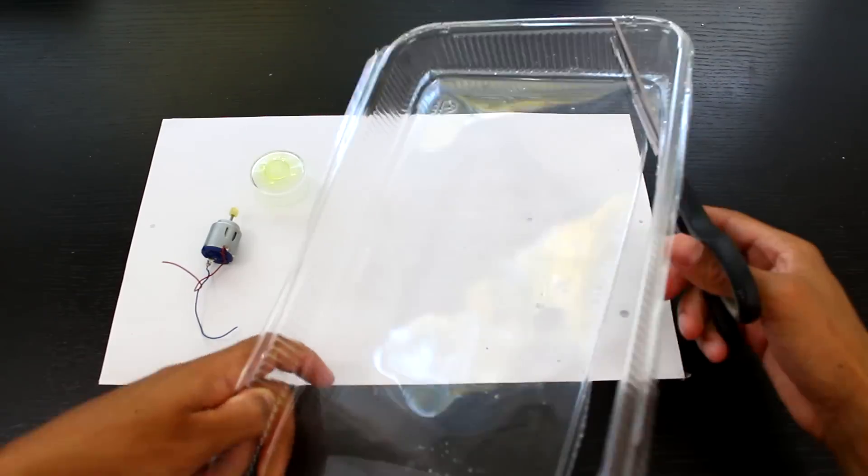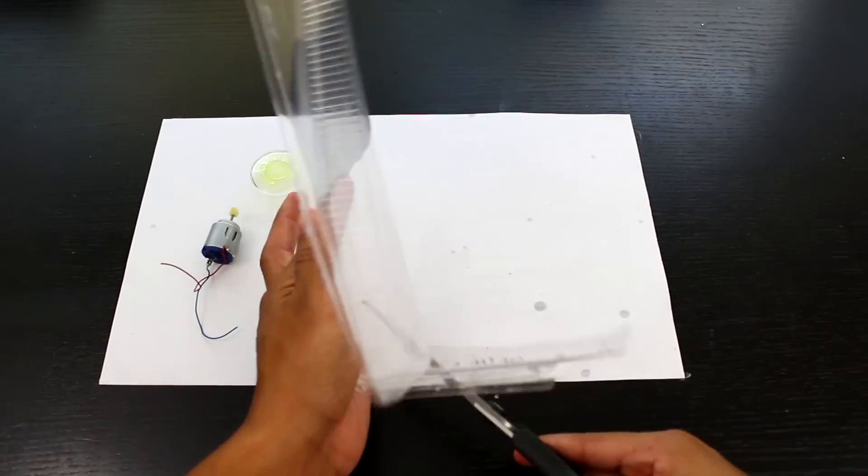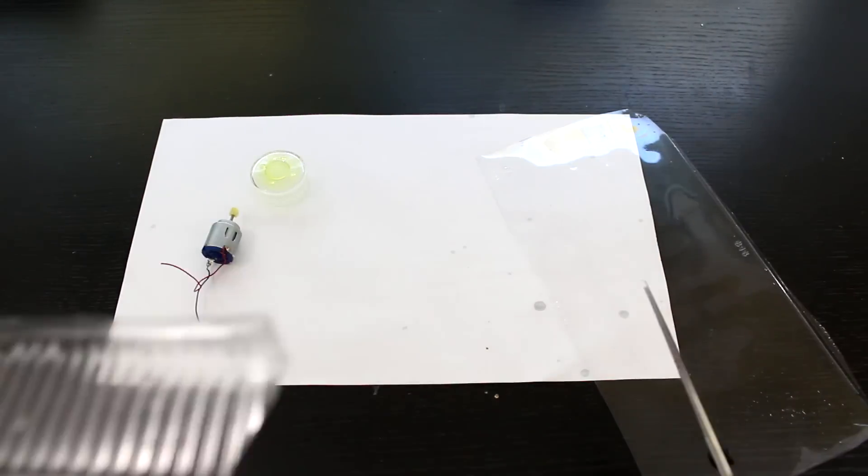Next I'm going to cut out this plastic sheet here and we're going to be using this for all sorts of stuff, both inside and outside components of the pump.